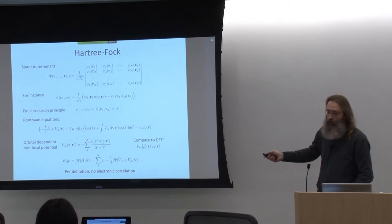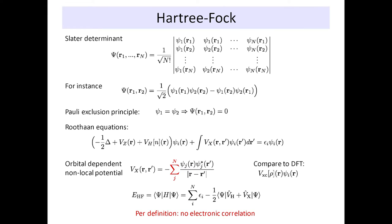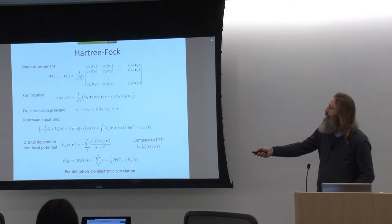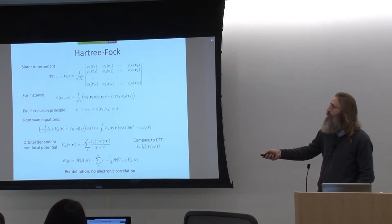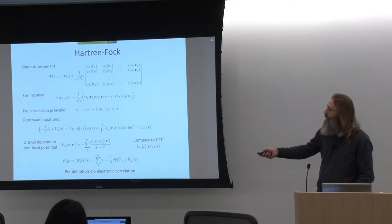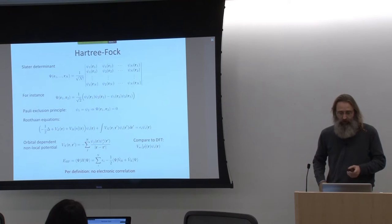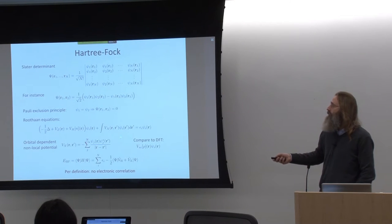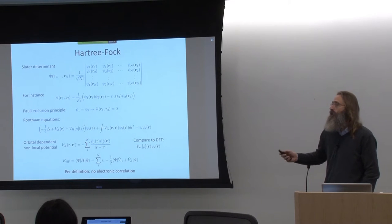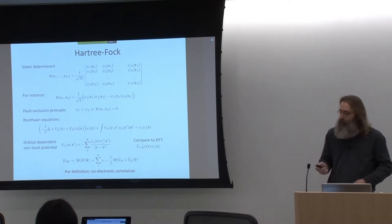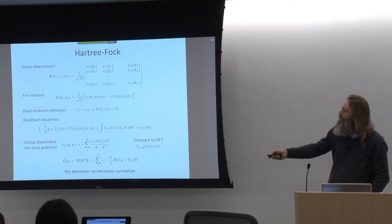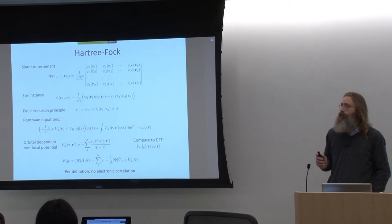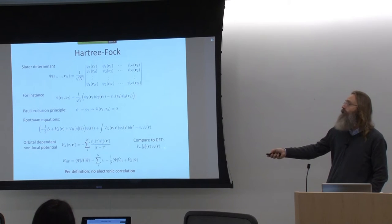The Fock exchange potential depends on R and R prime. And not only is it non-local, it is orbital dependent. So we end up with an expression that does not depend only on the density, but depends on the orbitals itself. This is the exchange potential and you see here there's a sum over the occupied orbitals. That has some consequences for the way we solve for these equations, and obviously a sum over states inside of this potential has computational consequences as well. It's quite a bit more expensive to evaluate the action of such a potential on another orbital than the action of the exchange-correlation potential in DFT on an orbital, which is a simple point-by-point multiplication.